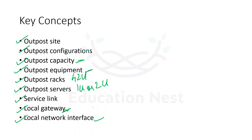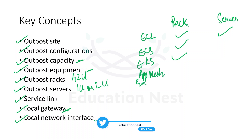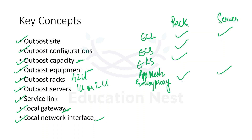Looking at what Outpost rack and Outpost server support: EC2 instances are supported in both. ECS clusters are supported in rack but not server. EKS is supported in rack but not server. App Mesh Envoy proxy is supported in both. For storage, EBS is supported in both since EC2 is supported in both, and S3 is supported in rack.